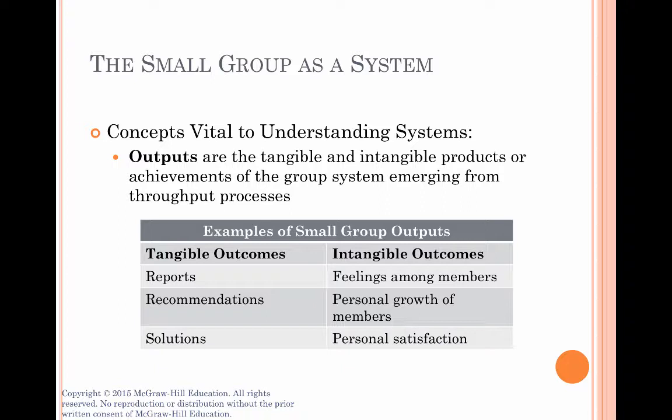Outputs are the result of the inputs and throughputs — the tangible and intangible products or achievements of the group. Some tangible results of a small group could be the final decisions or recommendations put into a report or a presentation with PowerPoints or other visual aids, speeches, or even actual physical objects the group is designed to create — for example, a prototype of a car created by a work group at an automotive manufacturer. But there are lots of intangible outcomes as well, like friendships that blossom between members or feelings of satisfaction and personal growth, or not-so-positive ones like feelings of animosity or dissatisfaction.